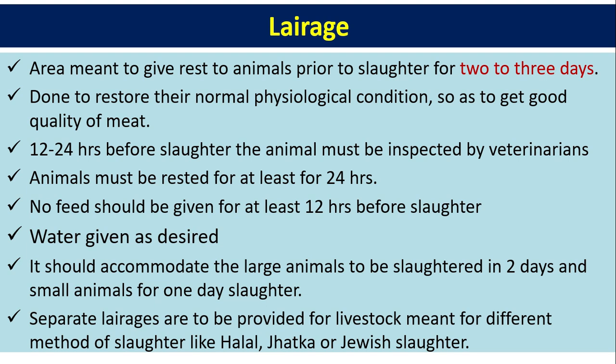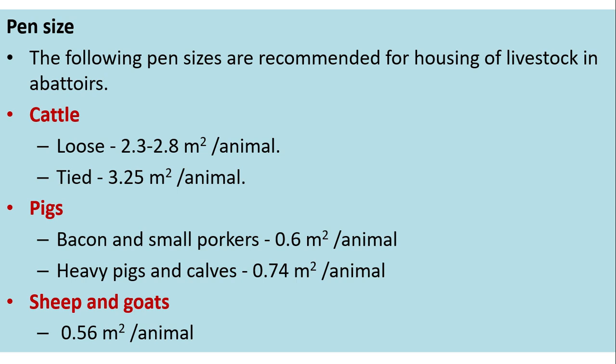Recommended pen sizes in abattoirs: cattle (loose) — 2.3 to 2.8 sq. m. per animal; cattle (tied) — 3.25 sq. m. per animal; pigs (baconers and small porkers) — 0.6 sq. m. per animal; heavy pigs and calves — 0.74 sq. m. per animal; sheep and goats — 0.56 sq. m. per animal.